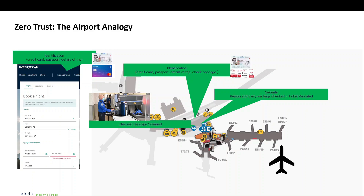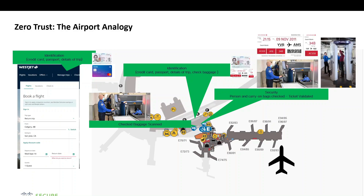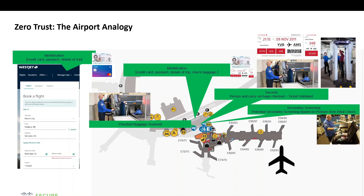Moving through security, they're scanning your items, checking your ticket, and even scanning your person — all to validate that nothing has changed in regards to your trust profile when it comes to flying. They're doing their due diligence to make sure nothing nefarious will take place. If something doesn't pan out, they may ask for secondary screening. They might open your carry-on bag, inspecting it for threats, but also checking for false positives that triggered the initial alarm.